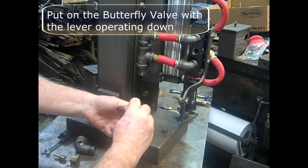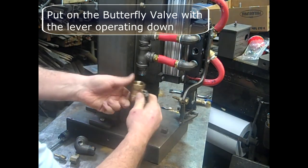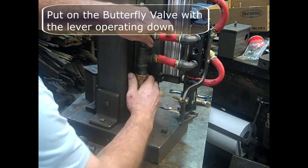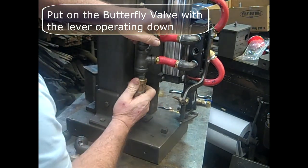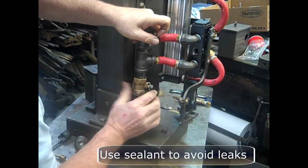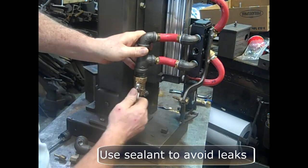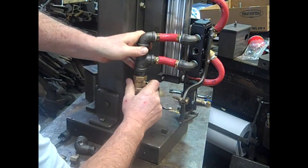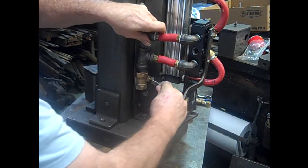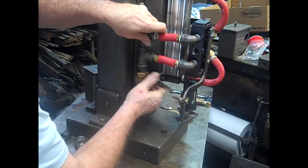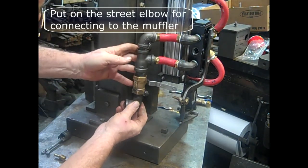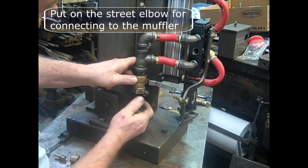Put on the butterfly valve with the lever operating down. Use sealant to avoid leaks. Actually, I've used Teflon tape before, but I have found that sealant actually works better. Sometimes I get leaks with the tape. Put on the street elbow for connecting to the muffler.